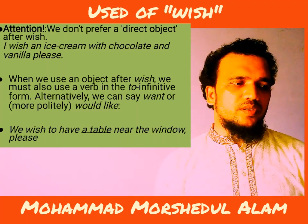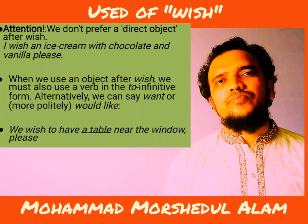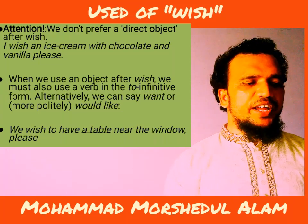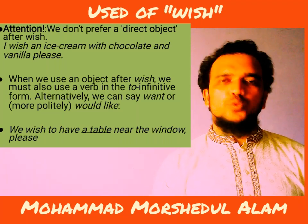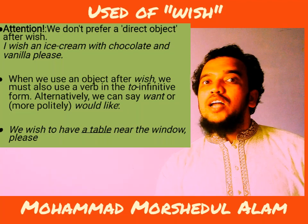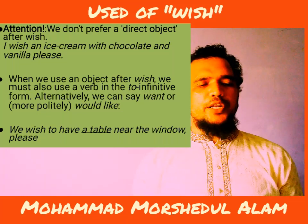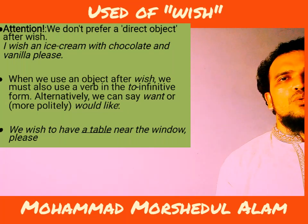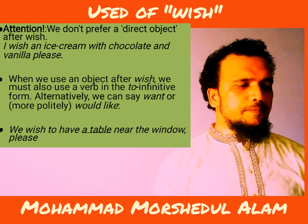Similarly, 'I wish an ice cream' should be 'I wish to have an ice cream' or 'I wish to eat an ice cream with chocolate and vanilla.' When you use an object after 'wish,' you must also use a verb in the to-infinitive form. Alternatively, you can say 'want to' or more politely 'would like to': I would like to have an ice cream, I want to have an ice cream, I wish to have an ice cream, We wish to have a table near the window please.